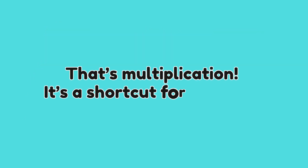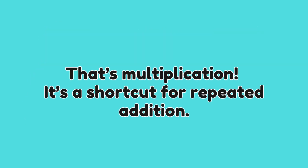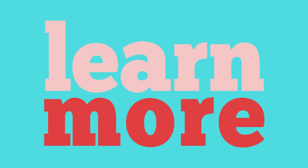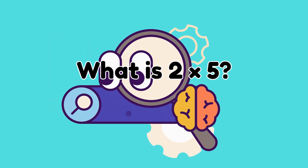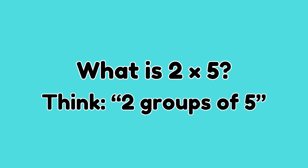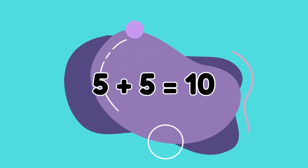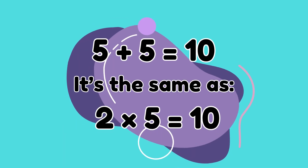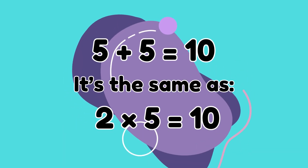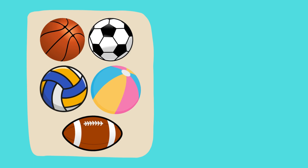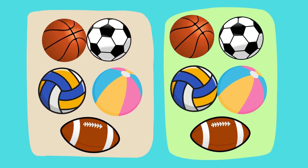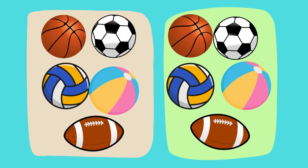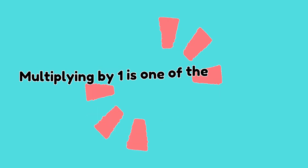That's multiplication! It's a shortcut for repeated addition. Try this example: what is two times five? Think of two groups of five. Five plus five is equal to ten, so two times five is equal to ten.